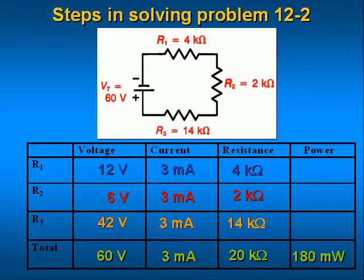Next we compute the power dissipated by R1 by multiplying the voltage across the resistor times the current flowing through it: 12 volts times 0.003 amps equals 0.036 watts or 36 milliwatts. Similarly for R2, the power dissipated is 6 volts times 0.003 amps equals 0.018 watts or 18 milliwatts.